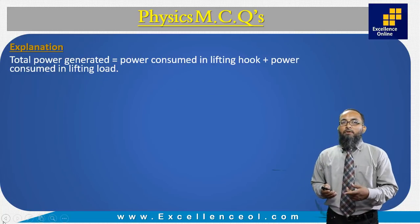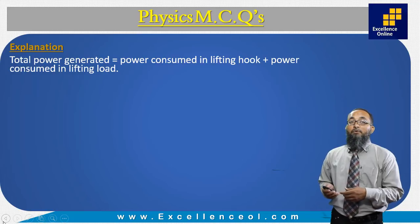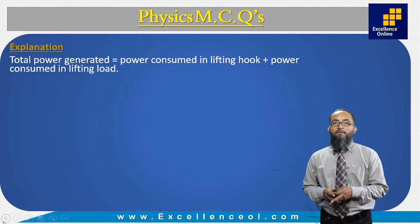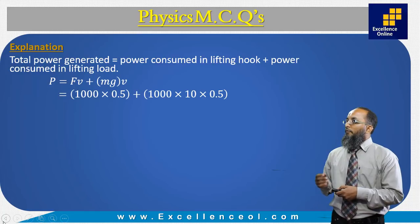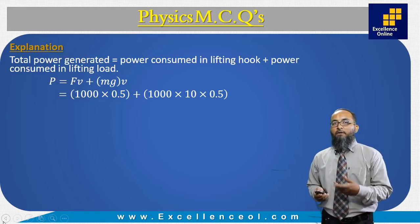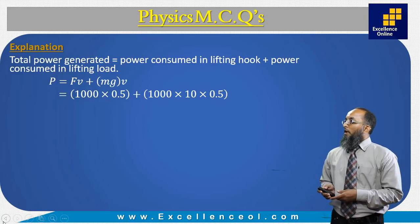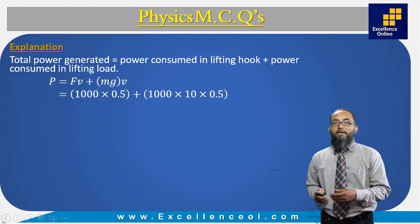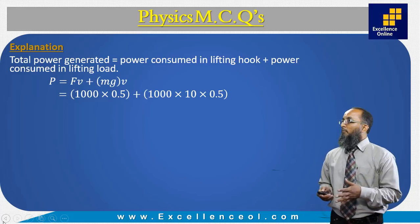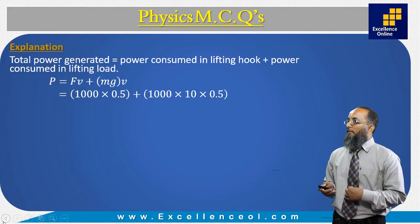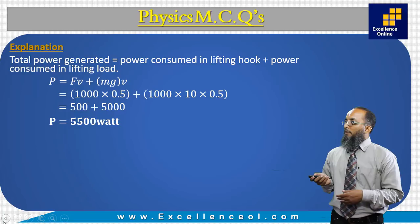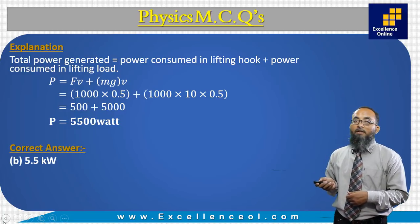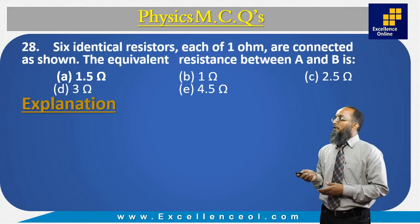The total power generated by the motor of a crane equals the power consumed lifting the hook plus the power consumed lifting the load. Power = force × velocity. Power for the hook: 1000 N × 0.5 m/s = 500 W. Power for the load: mg × v = 1000 × 10 × 0.5 = 5000 W. Total = 5500 W = 5.5 kW. The correct answer is B: 5.5 kilowatts.